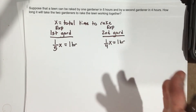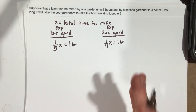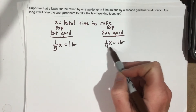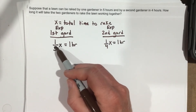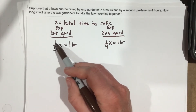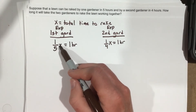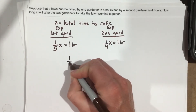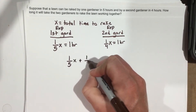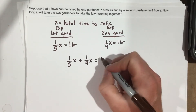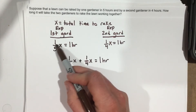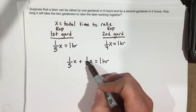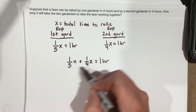If I want to combine this together into one problem to figure out how long it takes these two people to rake together, all I've got to do is combine these two equations. The first gardener works at one-fifth of the total time each hour, and the second works at one-fourth each hour. So one-fifth x plus one-fourth x equals what these two gardeners can do in an hour together.